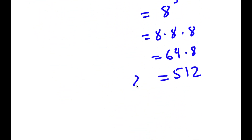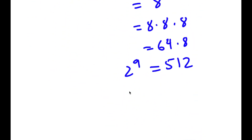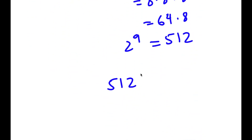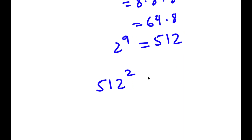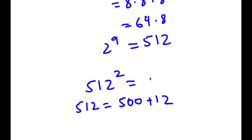So 512 is our value for 2 to the power of 9. So now we have 512 squared. Now how would we solve 512 squared? Well, 512 is the same thing as 500 plus 12. So substituting in 500 plus 12 for 512, I get 500 plus 12, all squared.